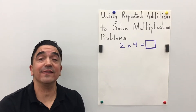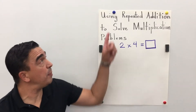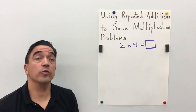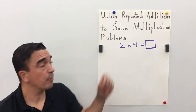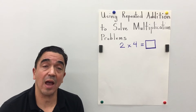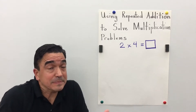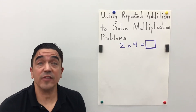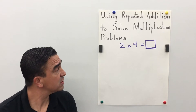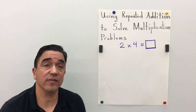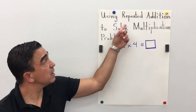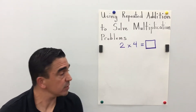Hi there, Coach Mike, and today we will be using repeated addition to solve multiplication problems. 2 times 4 equals... Let's pretend I don't know my math facts. I can solve this a different way. I can solve it by using repeated addition.